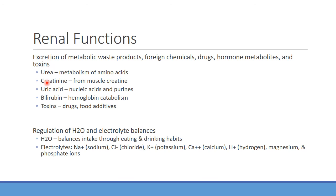Uric acid is released from nucleic acids and purines — really important in cancer patients like leukemias, where killing immature white blood cells with chemotherapy releases lots of nucleic acids broken down to uric acid, causing severe hyperuricemia. Bilirubin is eliminated from hemoglobin catabolism. Many drugs are eliminated through the kidneys either as parent compounds or metabolites, along with food additives.